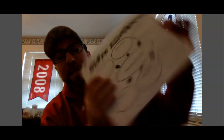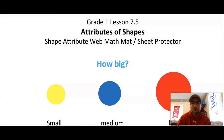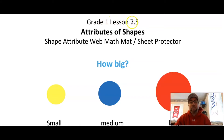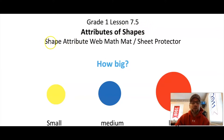Once you find it, place it inside your sheet protector, grab your marker, and you are ready to go because I am about to shrink myself into the corner. Today, we are going to be doing grade one lesson 7.5 attributes of shapes, and you will need your shape attribute web math mat placed inside of your sheet protector.